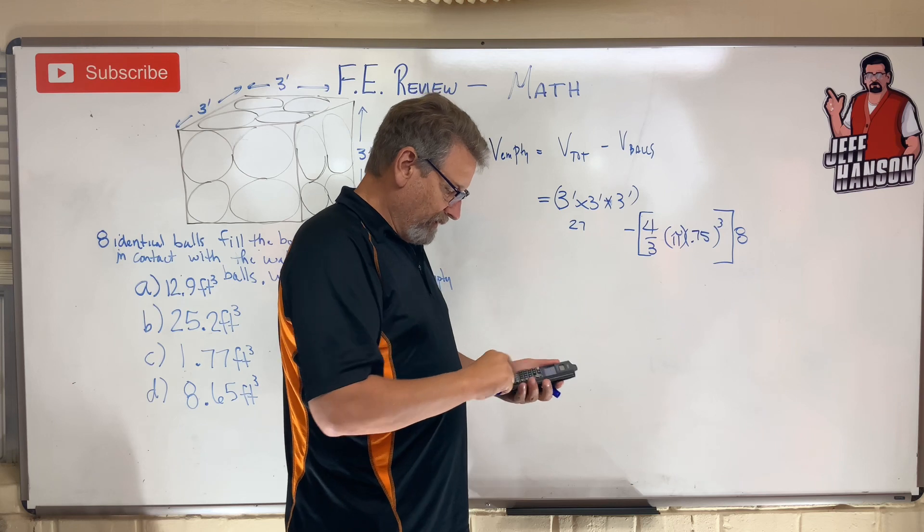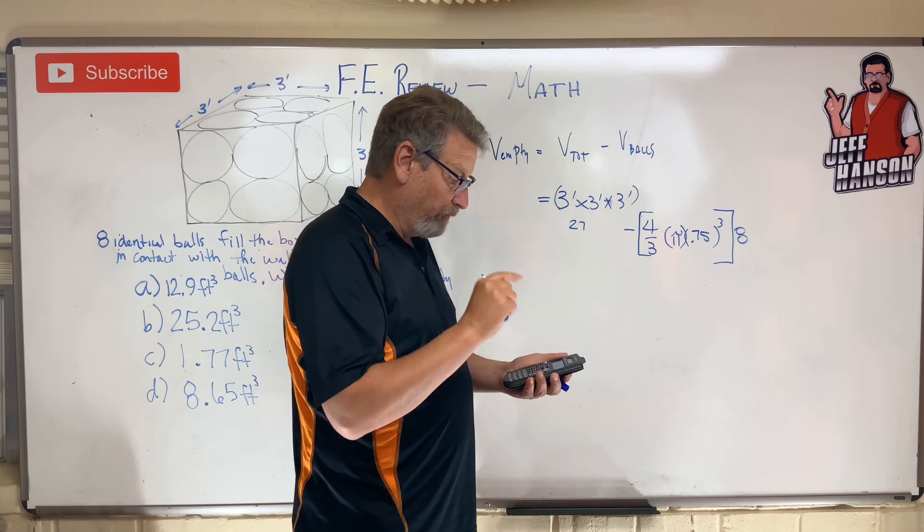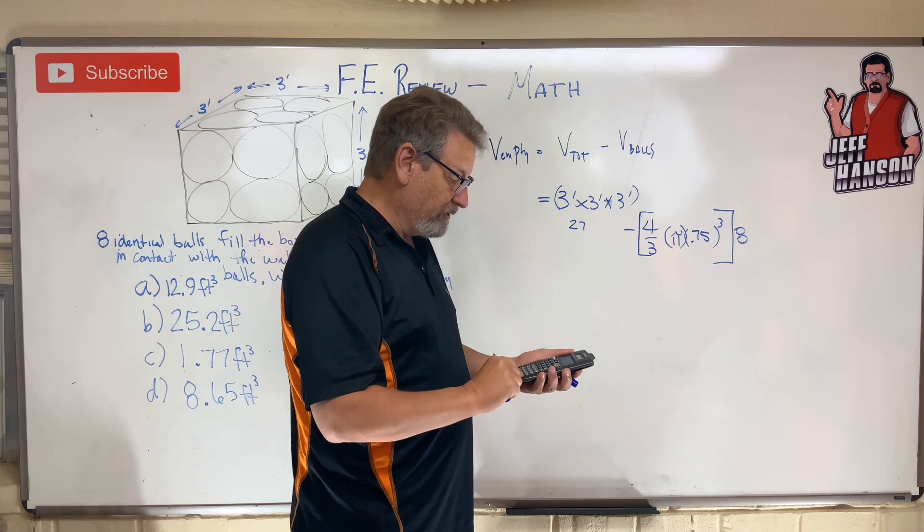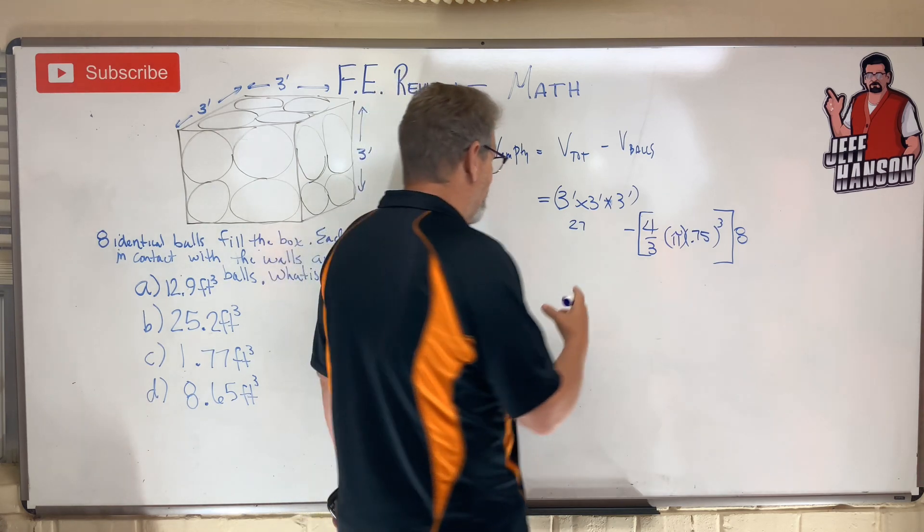Eight times answer equals 14.13 and then 27 minus answer equals 12.86.